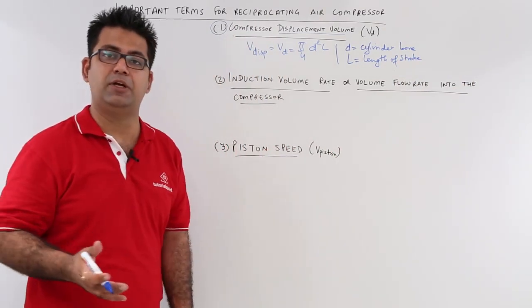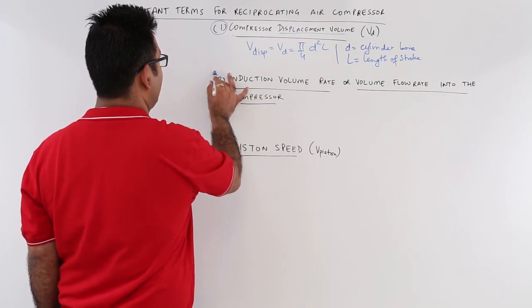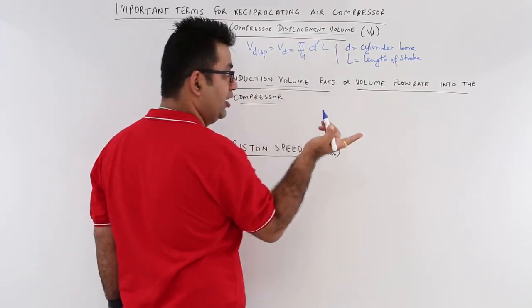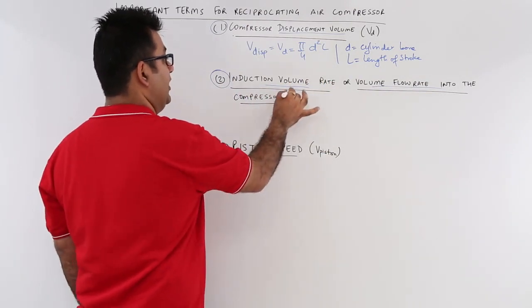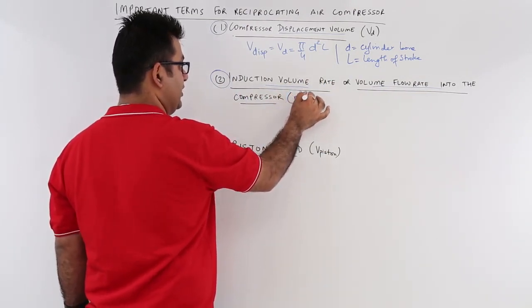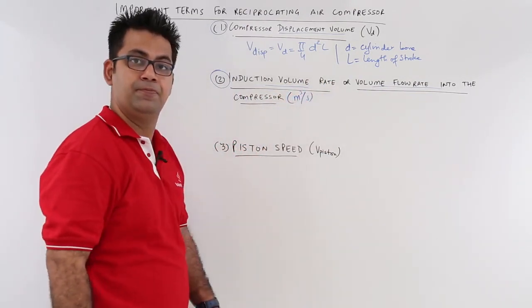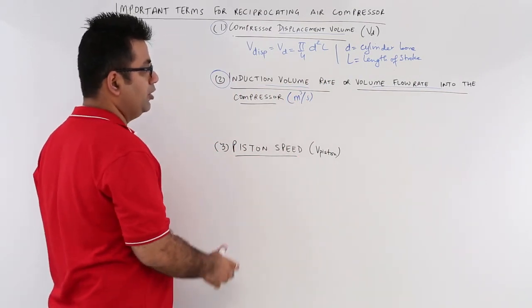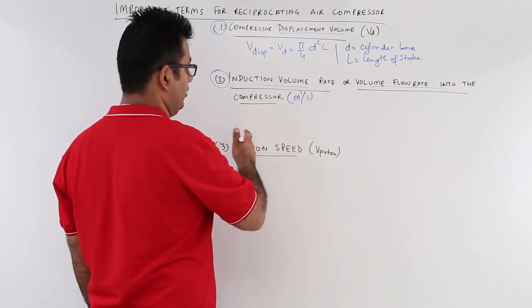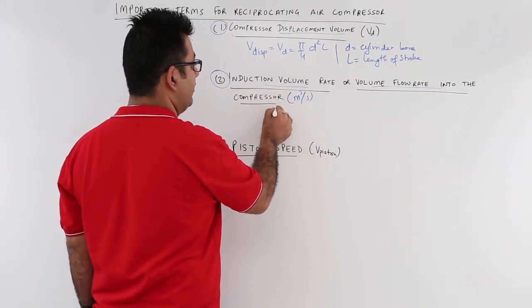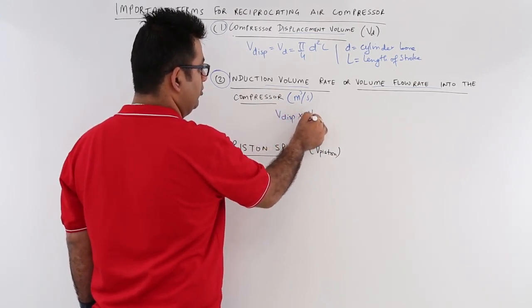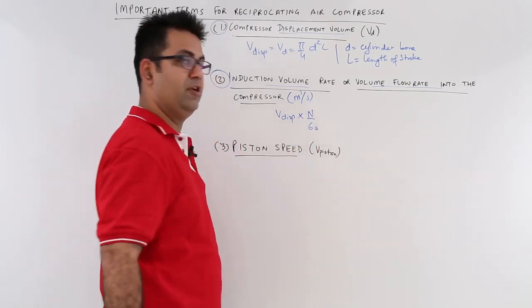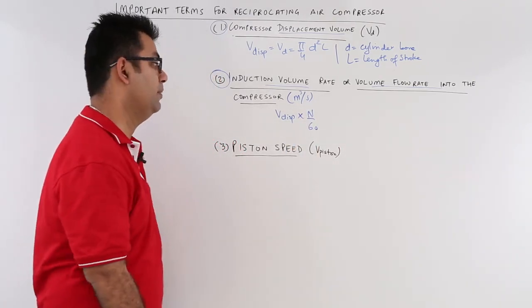The second very important term is the induction volume rate, or it is also known as the volume flow rate into the compressor, and the units to express this is meter cube per second. The volume flow rate is basically equal to the displacement volume times number of revolutions per second, that is rpm by 60.